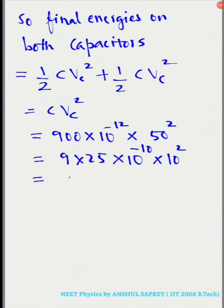If we solve this, by solving we will get 225 into 10 raised to minus 8 or 2.25 into 10 raised to minus 6 joule.